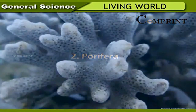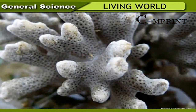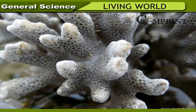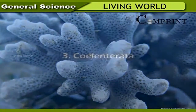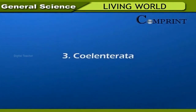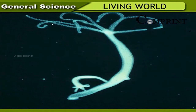Porifera: these are simple multicellular organisms with many minute pores on their body. They live attached to a substratum — example: sponges. Cnidaria: these are diploblastic animals with finger-like structures called tentacles — example: Hydra.